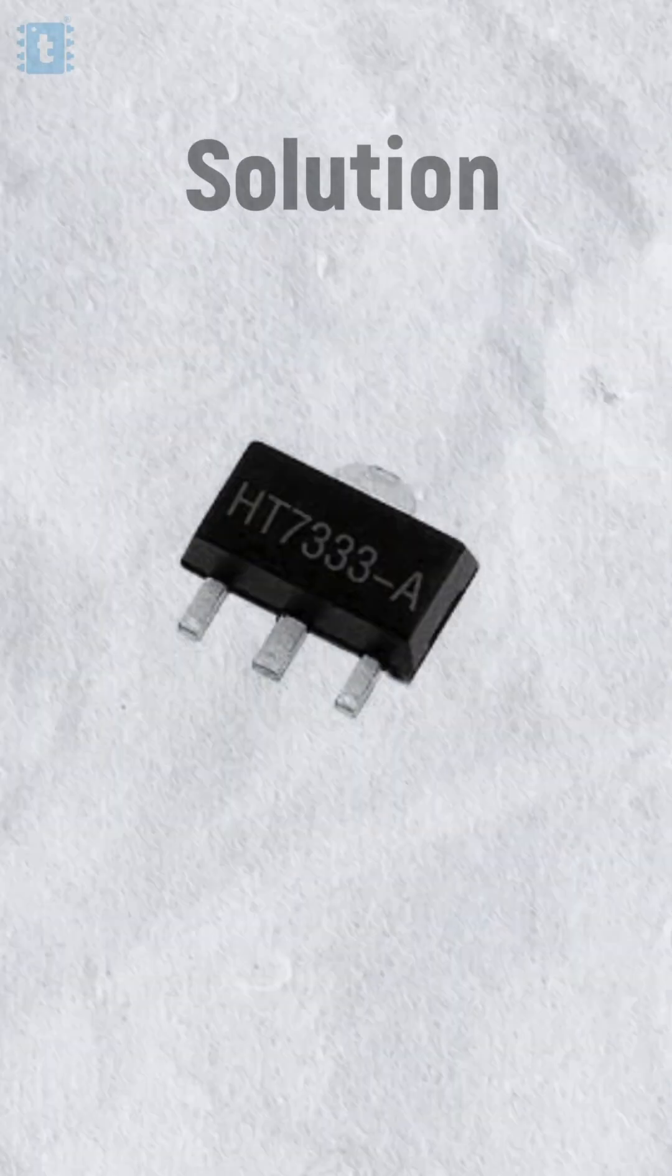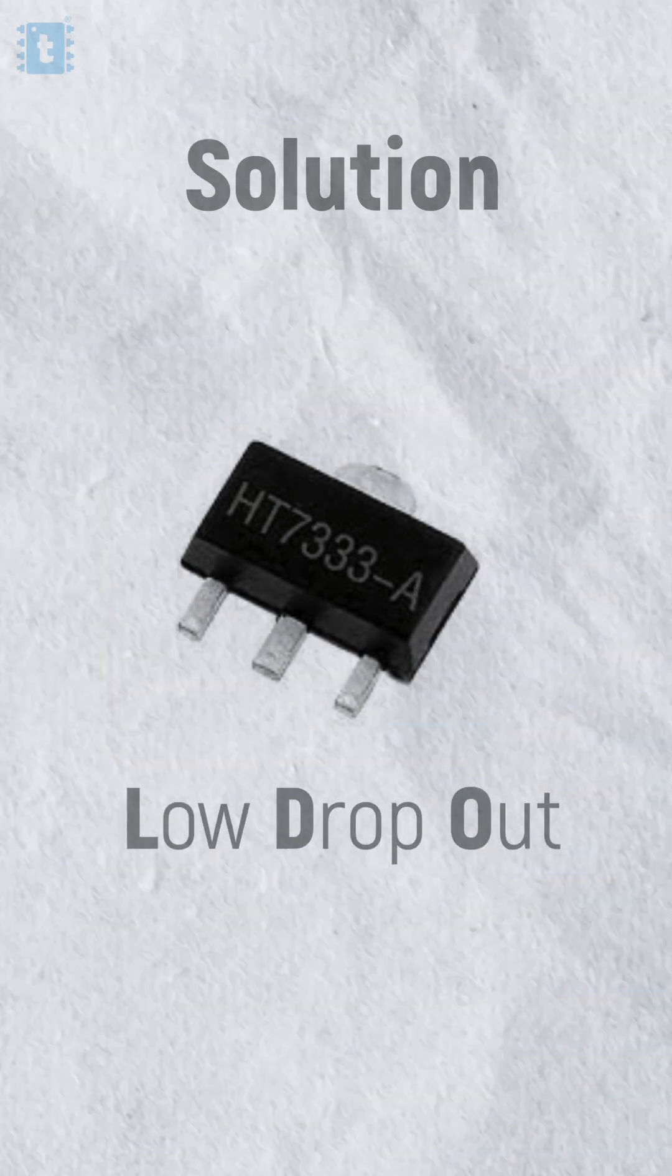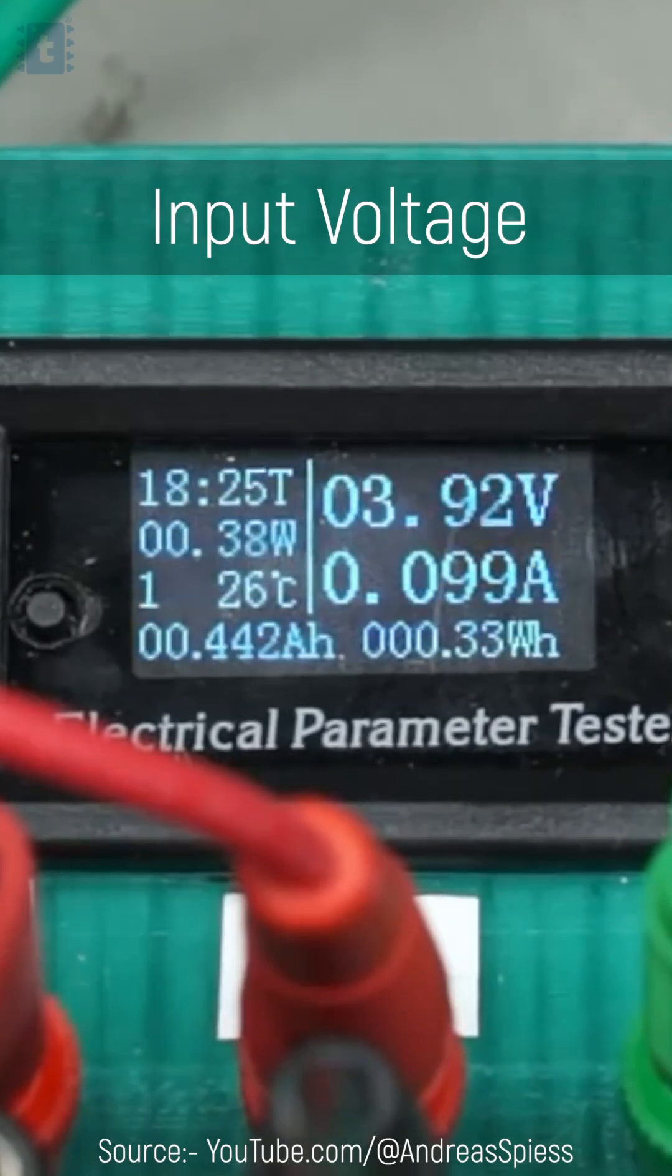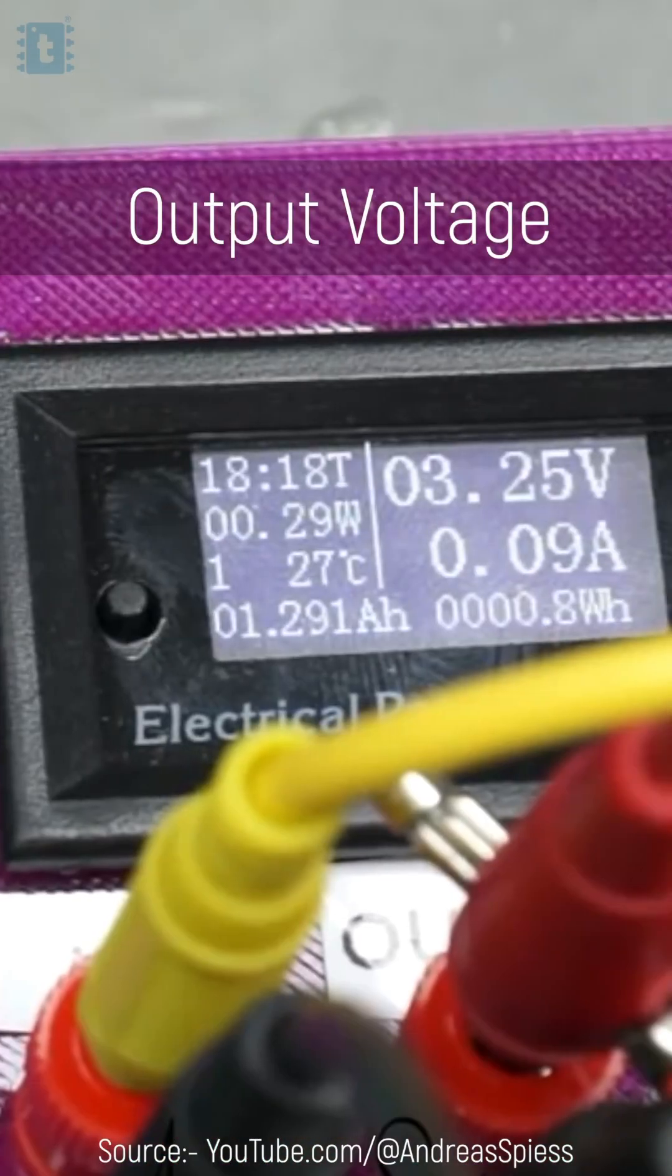So what's the solution? Well, the solution is to use HT7333, which is an LDO with just 0.11 volt dropout voltage, which means even if the input voltage goes below 4 volt, it can still provide 3.3 volt stable output, which is great for all our battery powered projects. I use this IC for a couple of my battery powered projects and that's why I say...